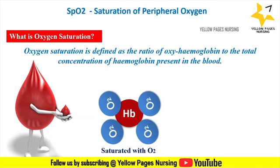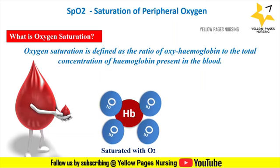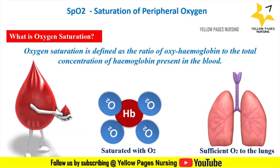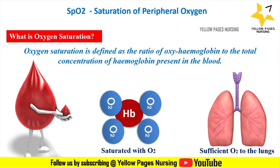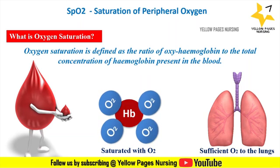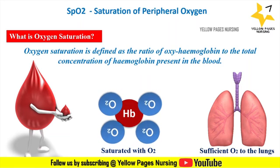Oxygen saturation is an indicator of oxygen transport in the body, indicating whether sufficient oxygen is being supplied to the body, especially to the lungs. This gives us an idea of how hemoglobin gets saturated with oxygen.